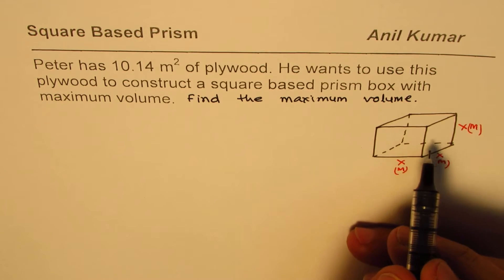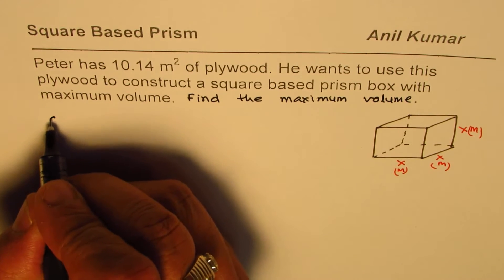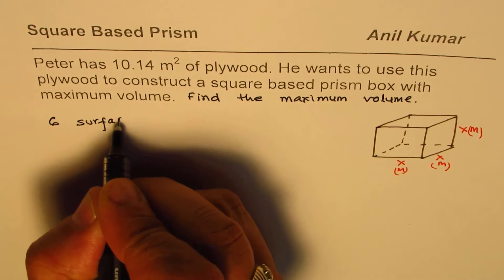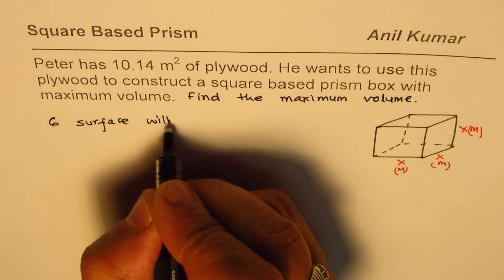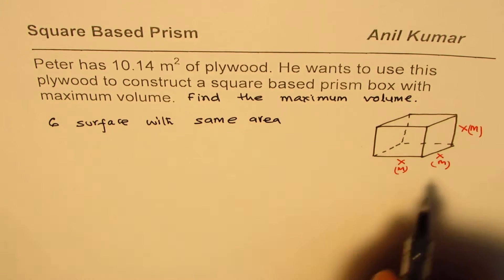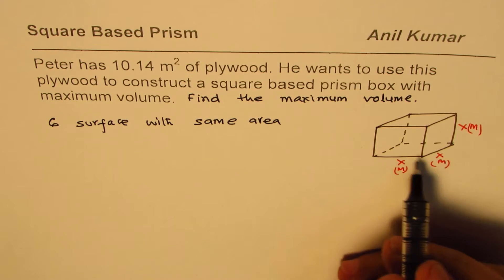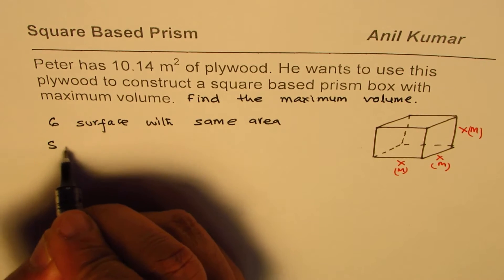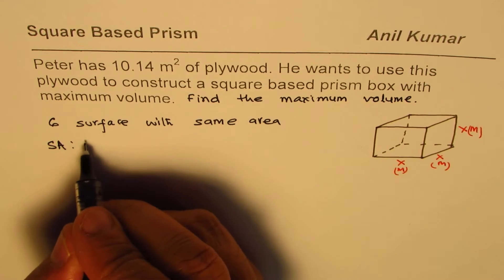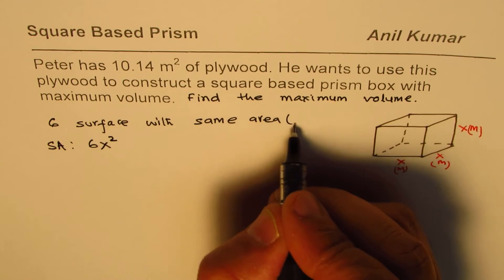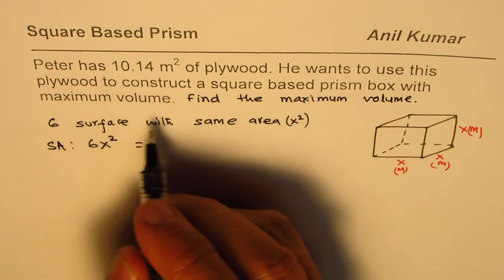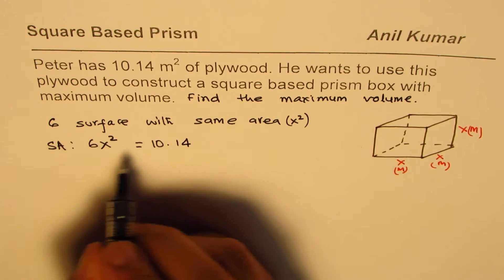This square meter is a surface area. We have six surfaces with same area, which is X squared. The surface area is 6 times X squared, and that should be equal to 10.14 square meters.